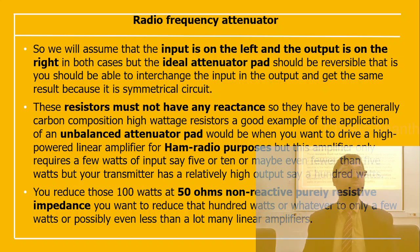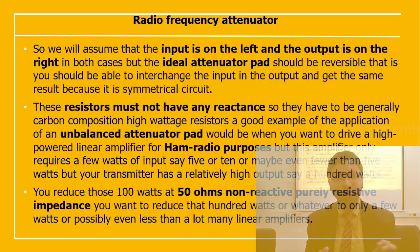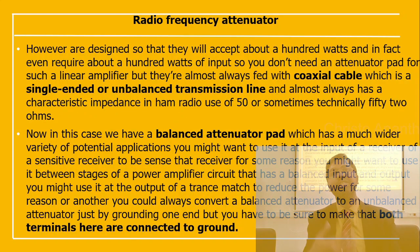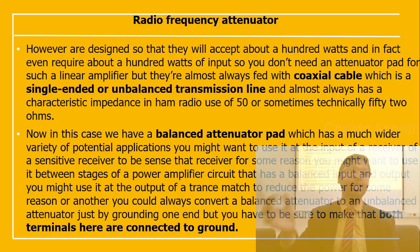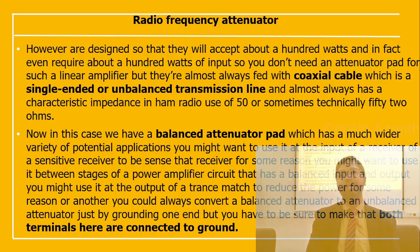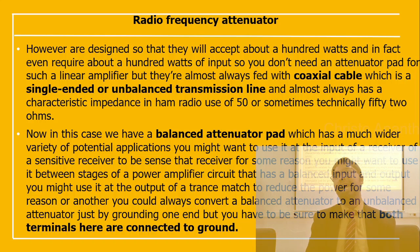The concern is reducing output power — for example from 100 watts — using a 50-ohm non-reactive purely resistive impedance. Linear amplifiers fed with coaxial cables may be single-ended or unbalanced transmission lines, with a characteristic impedance of 50 or 52 ohms in ham radio. In this case, a balanced attenuator pad is used for a variety of applications.